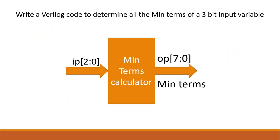The first question is on your screen, where you have to write a Verilog code to determine all the min terms of a three-bit input variable 'ip'. For your information, if the input vector is three bits then the possible combinations are eight, so the output vector 'op' will be eight bits. Corresponding to each possible combination, one of the 'op' bits will go high — so at a time only one bit will be high.